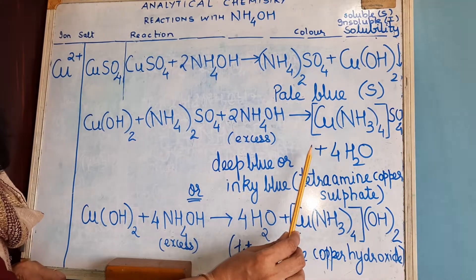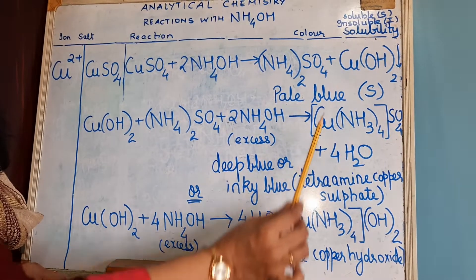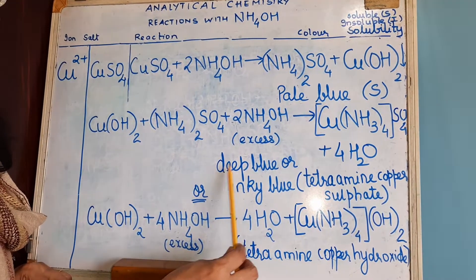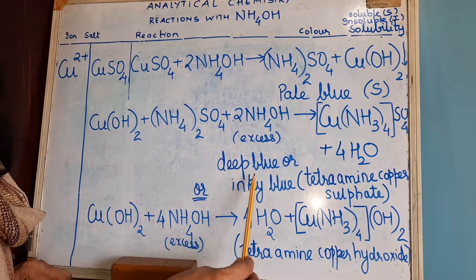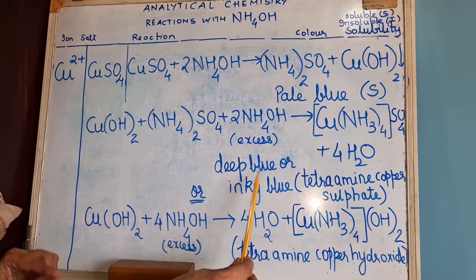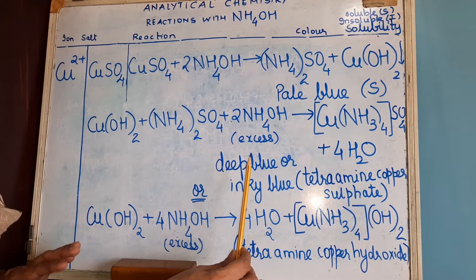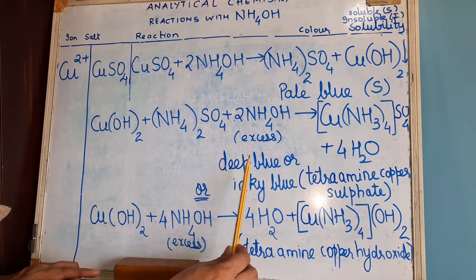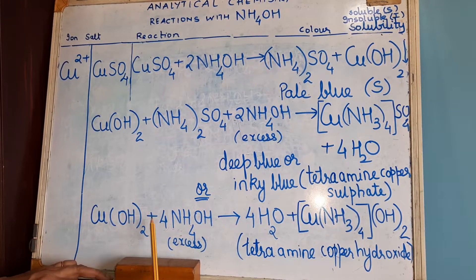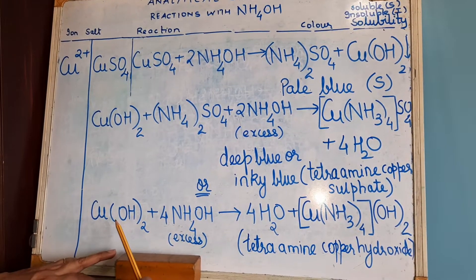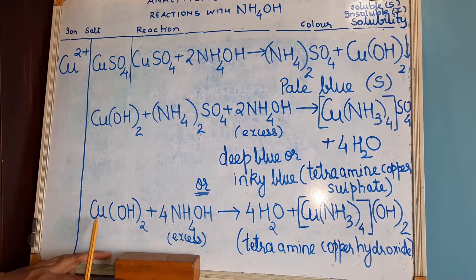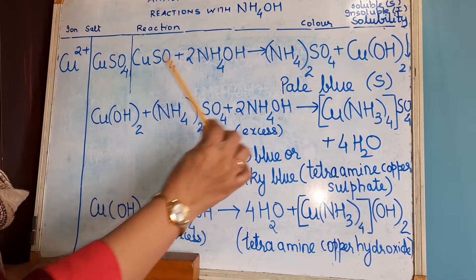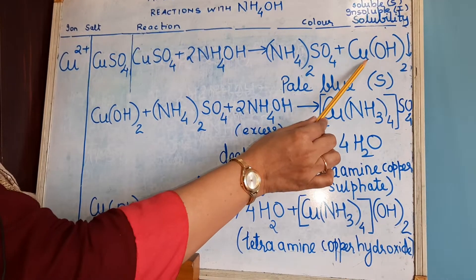Because it is a soluble complex, this precipitate dissolves and you will get a clear solution which is deep blue or inky blue in colour. If you observe the textbook or the PDF which will be subsequently given to you, there are two equations in this. In the second equation only the precipitate reaction is shown — this particular reaction is the formation of the precipitate.